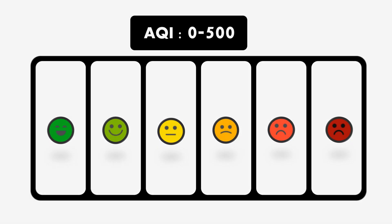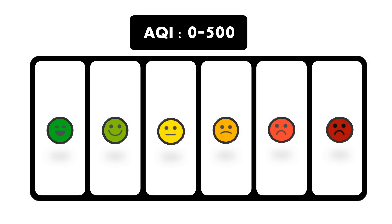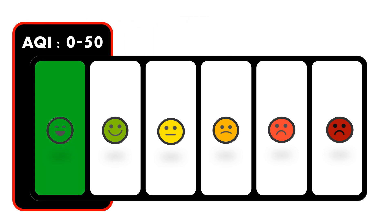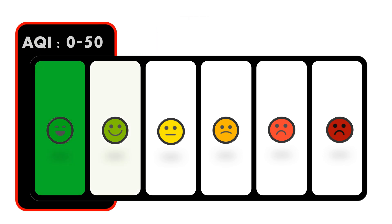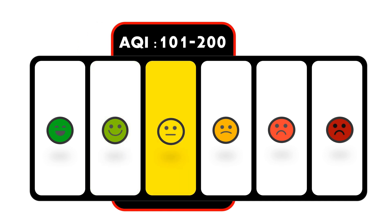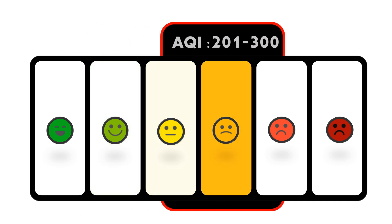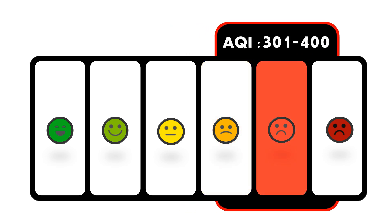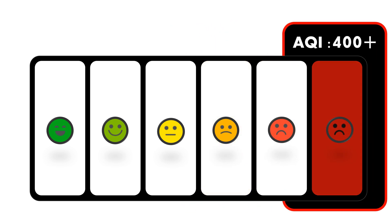The AQI value ranges: 0 to 50 is green; 51 to 100 is light green; 101 to 200 is yellow; 201 to 300 is orange; 301 to 400 is red; and 401 and above is dark red.